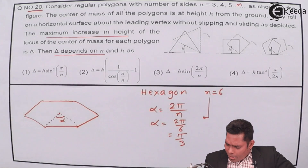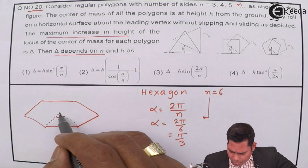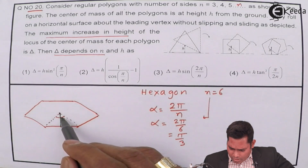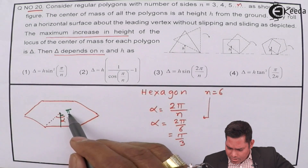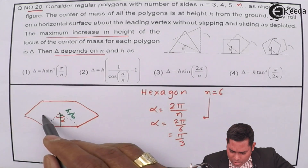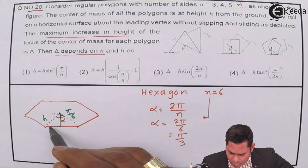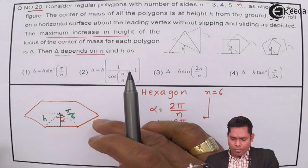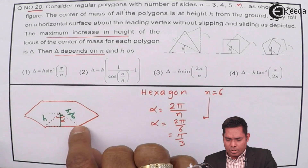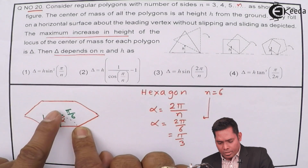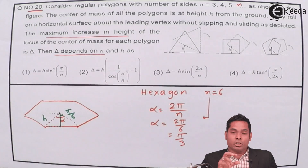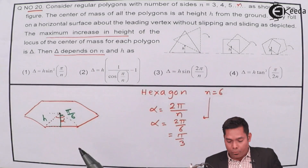If I bisect this angle π/3, then each half is π/6. So this part is π/6 and the other half is also π/6. Half of that total angle is π/6. Now this is my height h — the height h from the ground to the center of mass. When it turns about this point, what will be the position of the center of mass from the ground?